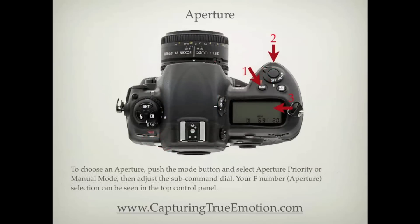To choose an aperture, push the mode button and select aperture priority or manual mode, then adjust the sub command dial. Your aperture selection can be seen in the top control panel.